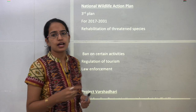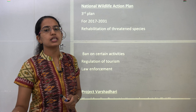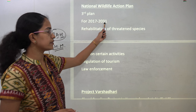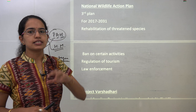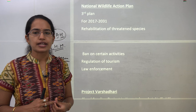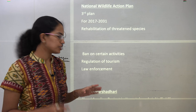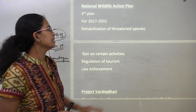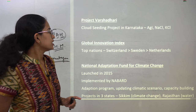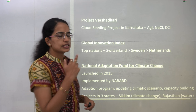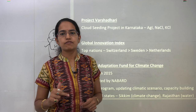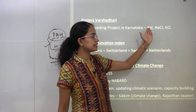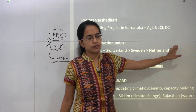The National Wildlife Action Plan was recently in the news. The third national wildlife action plan has been laid forward with a target period from 2017 to 2031. The idea is to ban certain activities in forest areas, regulate tourism, bring in strict enforcement laws, and rehabilitate threatened species. The next is Project Varshadari — a project launched in Karnataka for artificial rainfall through cloud seeding, caused mainly by silver iodide, sodium chloride, and potassium chloride.